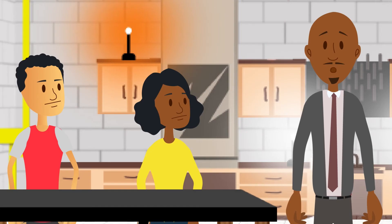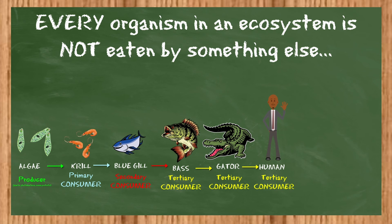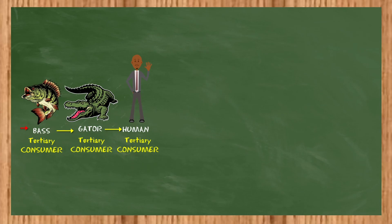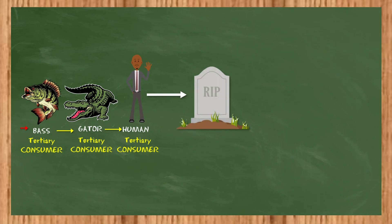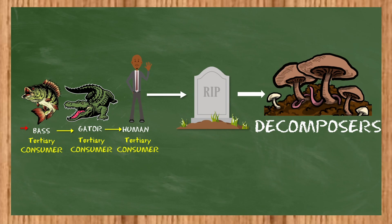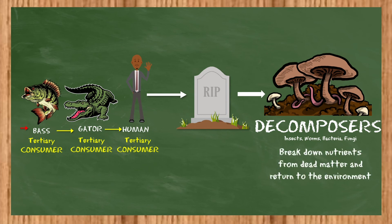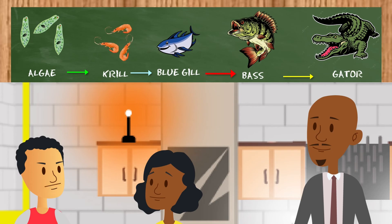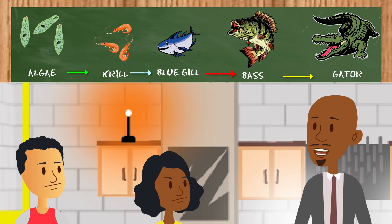Now, every single organism in an ecosystem doesn't actually end up being eaten or killed — in fact most of them don't. So where does our matter go? Sadly, all living things cannot live forever, and when that life ends, a very important player comes in to break that matter down and return it to the environment — these are called decomposers. These could be bacteria, certain insects, and more. What if a gator lives somewhere where there's no bass? It just dies and decomposes.